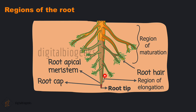Above the region of the meristematic cells is the region of elongation. The cells here undergo rapid elongation and are responsible for the length of the root. The cells in the region of elongation will gradually mature, and that is why the zone above the elongation region is also known as the region of maturation. From the region of maturation, some epidermal cells form very delicate thread-like structures called the root hairs, which are responsible for the absorption of water and minerals from the soil.